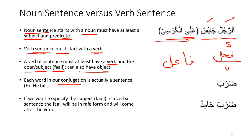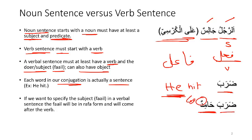Each word in the conjugation we covered earlier is in fact a sentence. If we say 'Daraba,' this means 'he hit,' which is a sentence. If we say 'Darabat,' that means 'she hit,' which is also a sentence. But if we simply say 'Daraba,' how do we specify the 'he'? We can specify it by adding a name — so when we say 'Daraba Hamidun,' the doer of the action is Hamidun. The doer or Fa'il always needs to be in Rafa form, which is why you see the 'un' ending. 'Daraba Hamidun' means 'Hamid hit.'